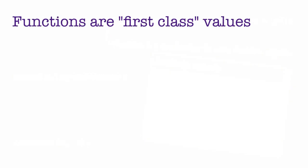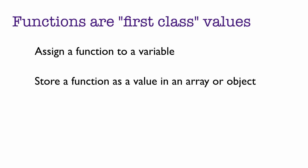One thing we spend quite a bit of time on in Chapter 10 of Head First JavaScript Programming is the idea that functions are first-class values, which means that you can assign a function to a variable, store a function as a value in an array or object, pass a function to another function, or get a function back from a function.